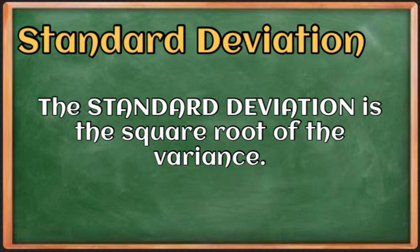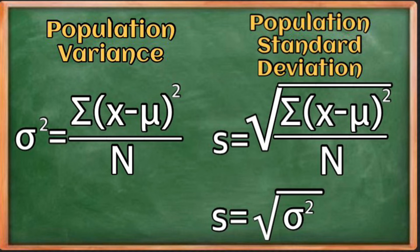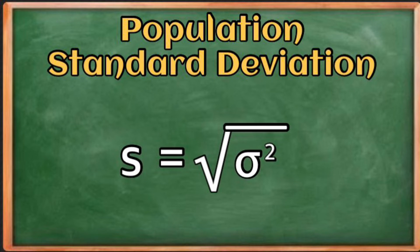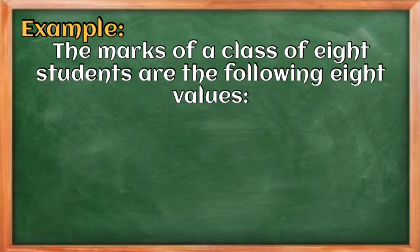The next measure of variability is the standard deviation. The standard deviation is simply the square root of the variance. As you can see from the formula, it is just the square root of the variance — so if you want to get the population standard deviation, just take the square root of the variance. Let us have this example: the marks of a class of eight students are the following eight values.